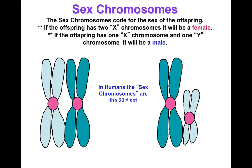On the 23rd chromosome, in males we have an X and a Y, and in females we have two Xs, or two copies of the X chromosome. We did the Punnett square a couple days ago and showed how there's a 50% chance of getting a male or female, because you have a 50% chance of getting the X chromosome or the Y chromosome from your father.